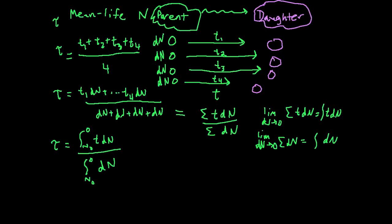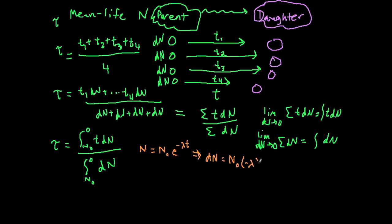In order to solve this, I need to substitute for the dn's and get them in terms of t. Remember the decay formula: n equals n₀ e to the negative lambda t. Taking the derivative with respect to t, dn equals n₀ times negative lambda, times e to the negative lambda t, dt. I can substitute this in for my dn's.